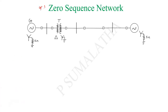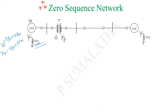For the zero sequence network concept, you need to understand how to represent it with respect to different transformer winding connections. The zero sequence component of the generator is represented as Z0 = ZG0 + 3ZN, or in terms of reactance: X0 = XG0 + 3XN. Here they have given the value of XN, so we represent it in the zero sequence network. For negative and zero sequence, there is no EMF. This is the XG0 value and this is 3XN — this is the generator equivalent circuit.